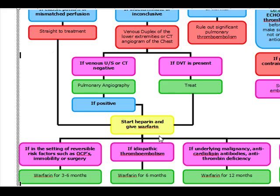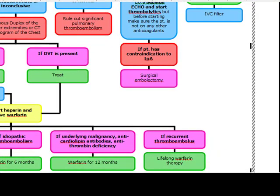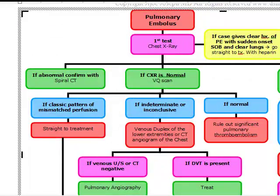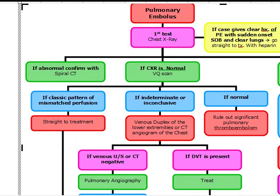How long do we keep them on warfarin? If it's in the setting of reversible risk factors such as oral contraceptive pills, immobility, or surgery, you're going to put them on warfarin for three to six months. If it's idiopathic thromboembolism, six months. If it's an underlying malignancy, anti-cardiolipin antibodies, or anti-thrombin deficiency, you're going to put them on warfarin for 12 months. If it's recurrent thromboemboli, you're going to put them on warfarin for life.